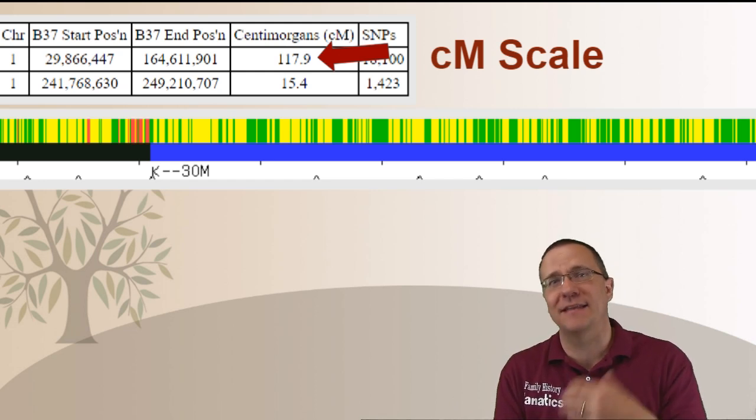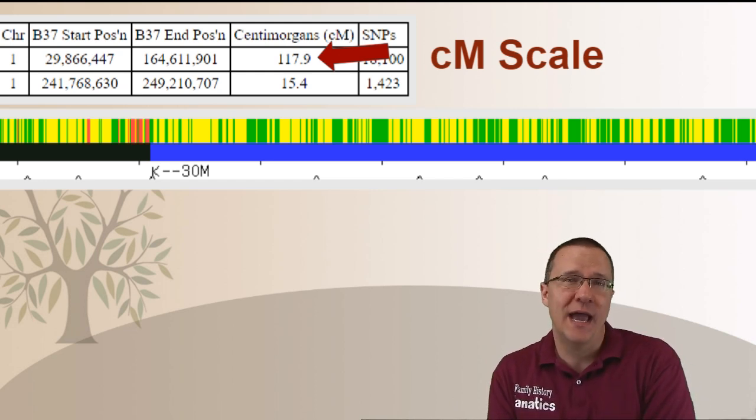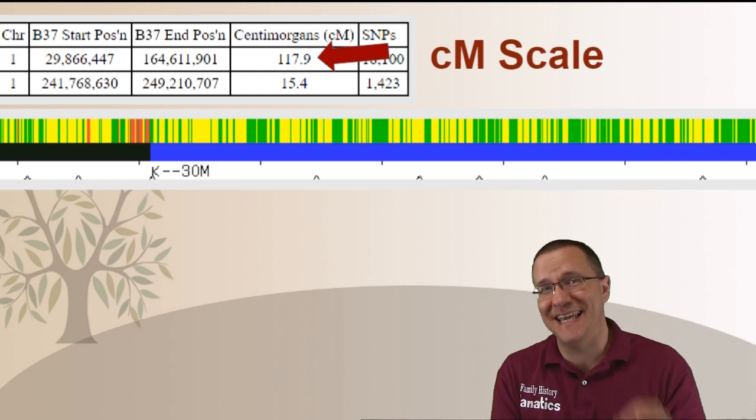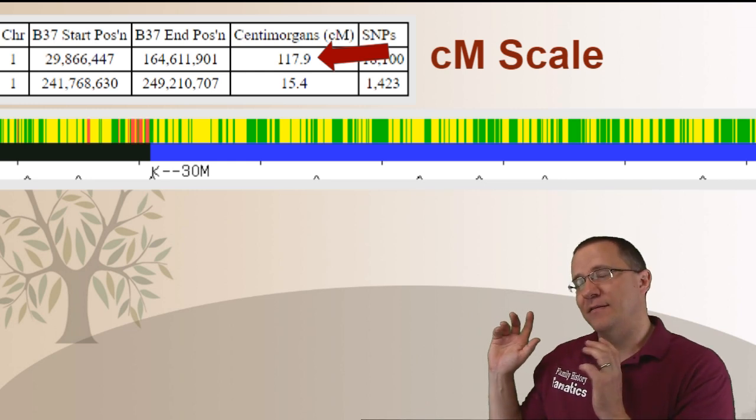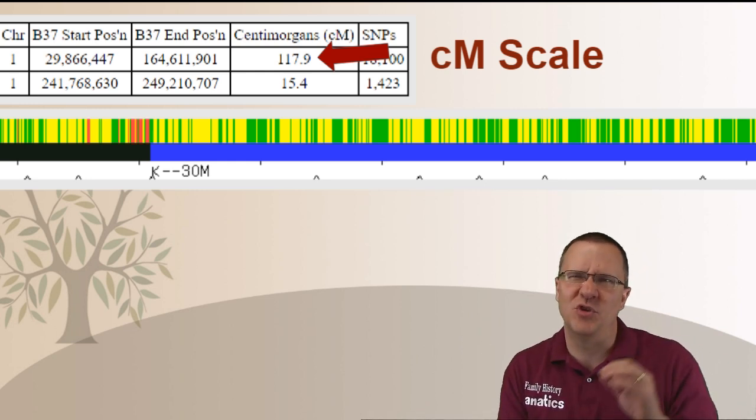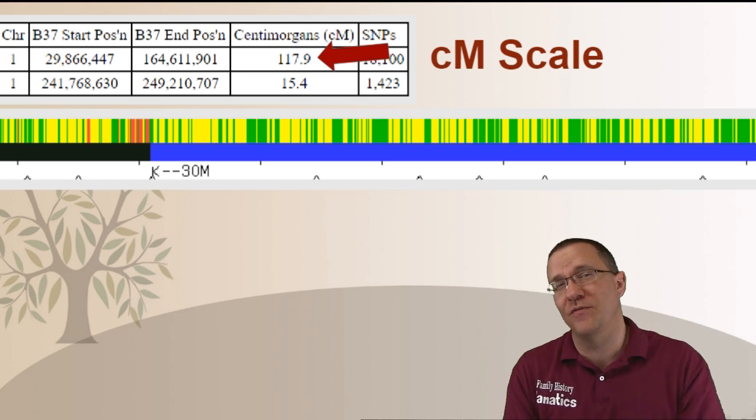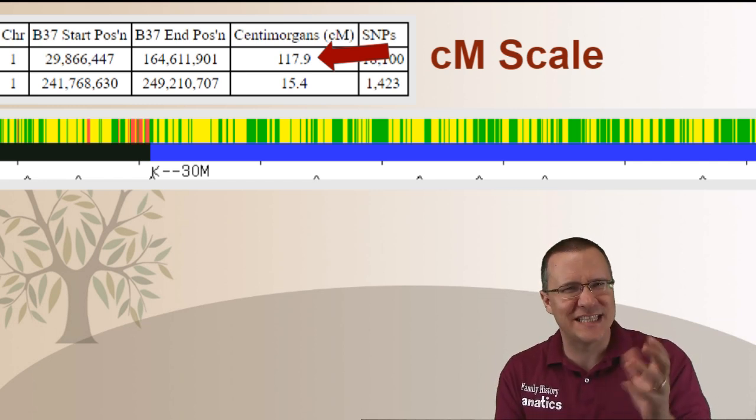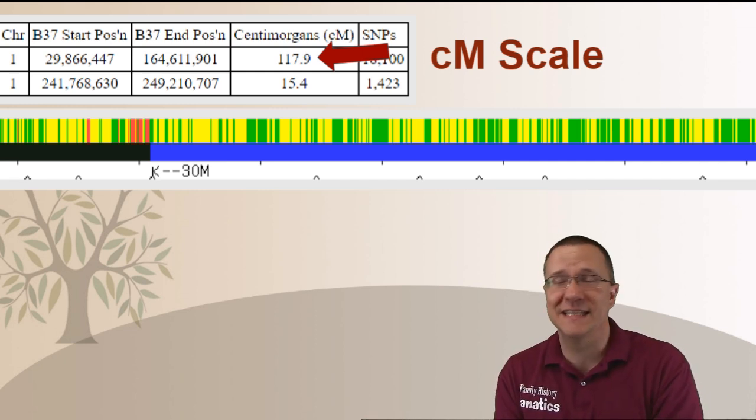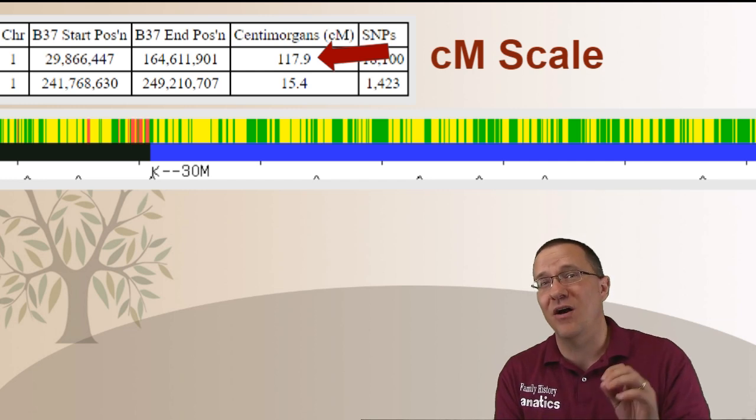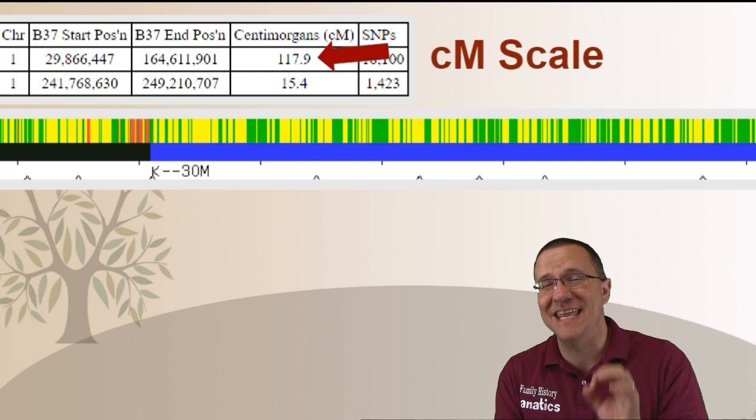But if you are looking at the table it will tell you how much centimorgans is in that segment. So for instance if I'm looking at the second segment on here from 241 megabases to 249 megabases it's about seven and a half megabases long and I can see that it is about 15.4 centimorgans.